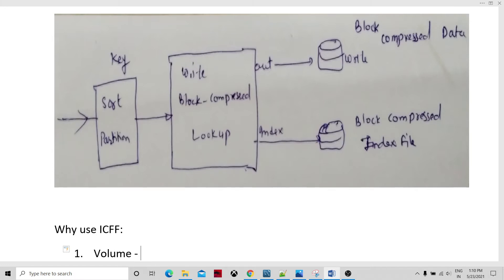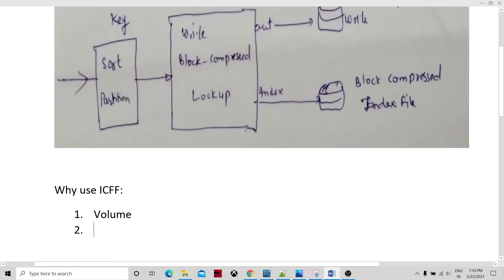ICFF is compressed and indexed. So the data would be compressed and there would be an index file. Due to compression, the size becomes lower. Therefore, we could store hundreds of terabytes of data for lookup. This is versus older lookup operations. One way was to store or hold the data into the database, but even then, accessing hundreds of terabytes from a database through a join or any other means is not efficient in terms of performance.